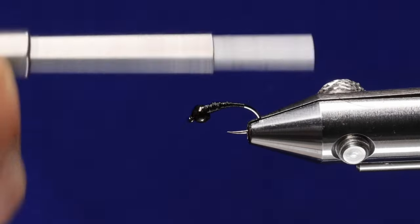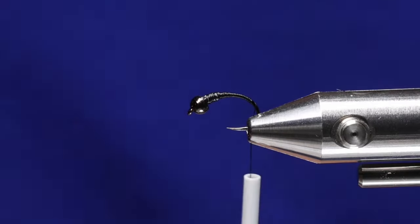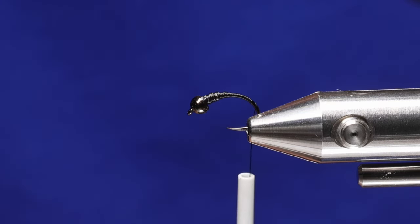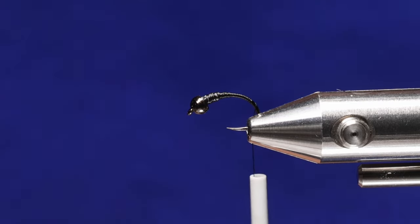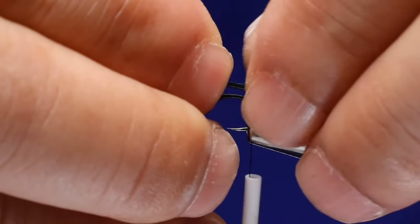Take your thread to the bend where we're going to tie in black pheasant tail. Take a couple strands of the black pheasant tail. I got approximately four to five here. Try to align the tips the best you can. Don't worry too much about the length when you first tie it in.